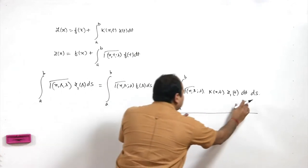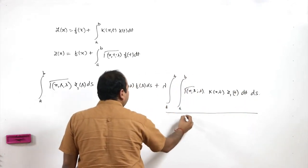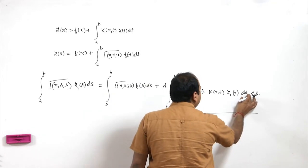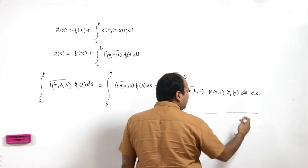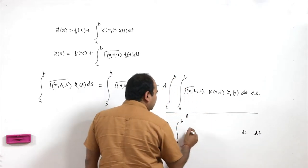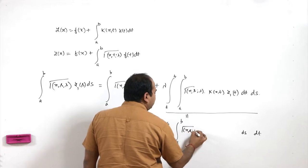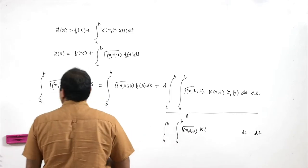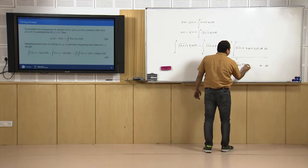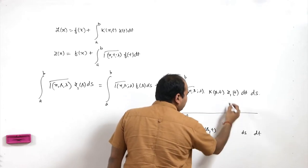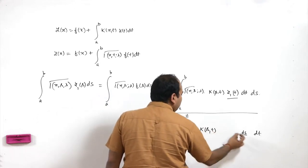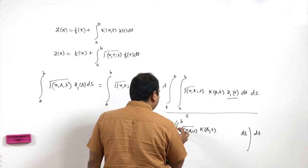We change the order of integration: after swapping, the inner integral is with respect to ds and the outer is dt. This gives λ∫y₁(t)[∫γ(x,s,λ)k(s,t)ds]dt. To evaluate the inner integral, we use the Fredholm relation satisfied by the resolvent kernel: γ(x,t,λ) = k(x,t) + λ∫γ(x,s,λ)k(s,t)ds.